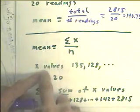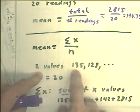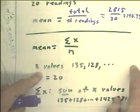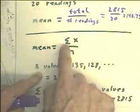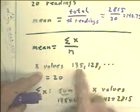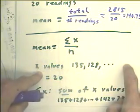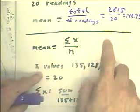In this case, the x values would stand for the blood pressures: 135, 128, and so on. So that the summation sign in front of the x means we add up all the x's. We add up all these values, and that's what we did when we got the 2815.